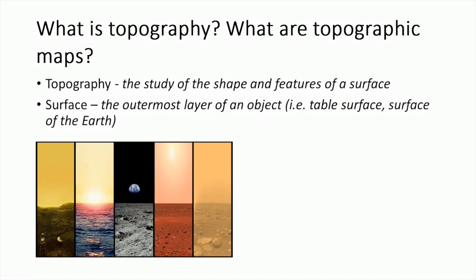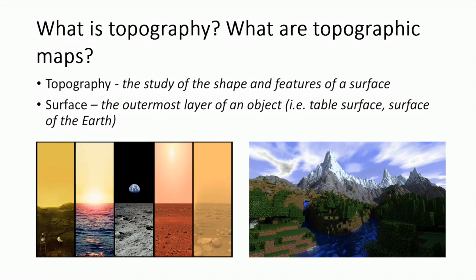Topographic maps are simply crude representations of different surfaces. These types of maps can provide insight into how a surface is shaped, and they serve as useful tools for identifying surface features or terrain, like mountain ranges, valleys, or river systems, to name a few.